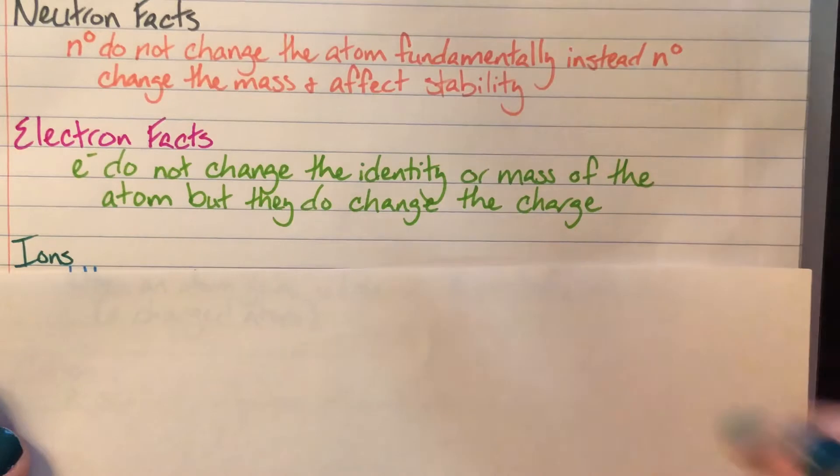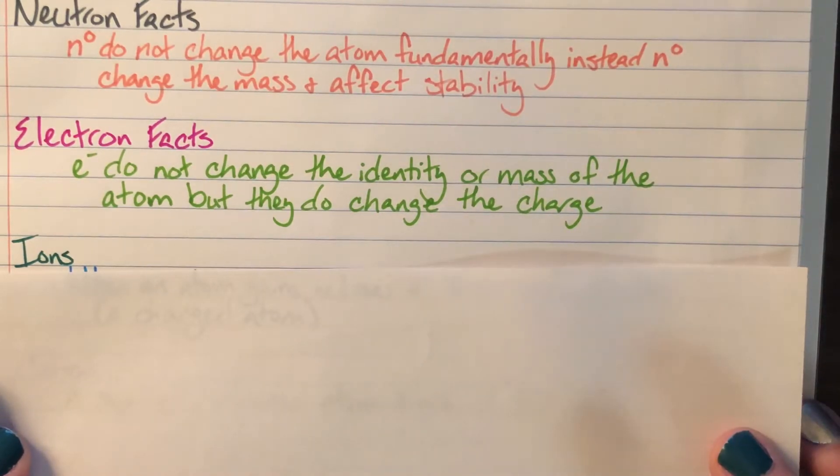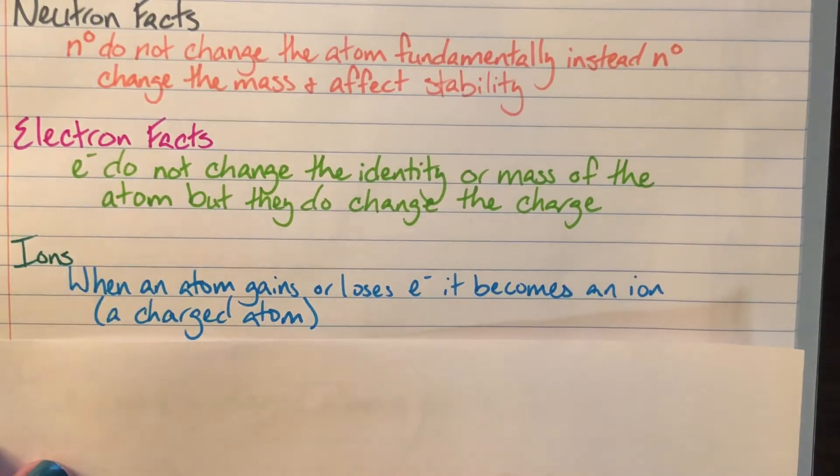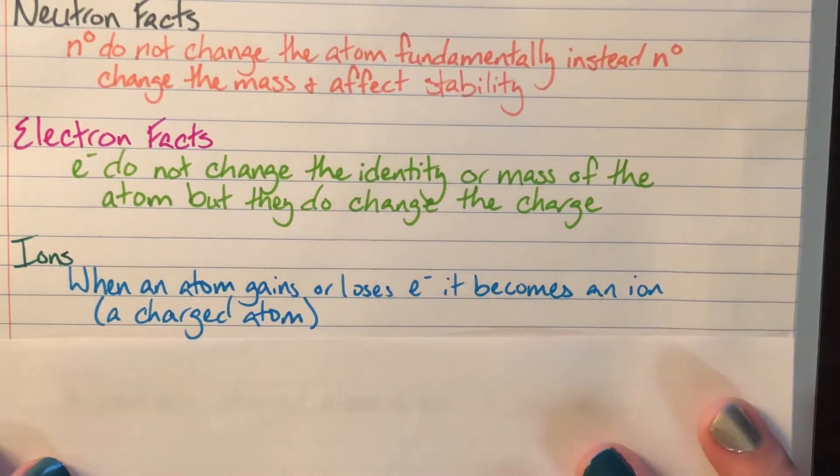Okay, so this is the effect of the electron count changing. So when an atom steals or loses electrons, it will become an ion, which is a charged atom. That's all an ion is. It's just a charged atom. And so we have to note whether losing or gaining electrons is going to make the atom positive or negative.